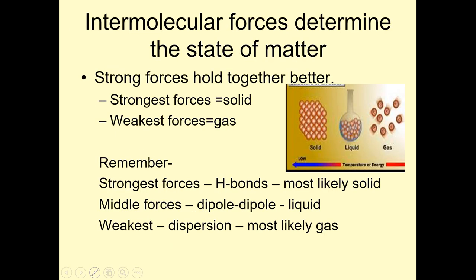Intermolecular forces determine the state of matter for covalent compounds. Strong forces hold them together. The strongest forces will be a solid. The weakest forces will have them be a gas. So H bonds are the strongest. Remember they are super polar, super dipole. And then dipole-dipole, and then dispersion. So strongest forces are H bonds, super polar, super dipole. They're most likely going to be a solid. Middle forces, dipole-dipole could be a liquid. Weakest, most likely a gas.